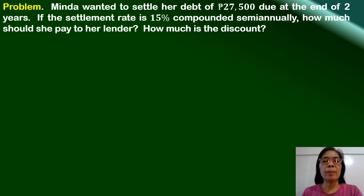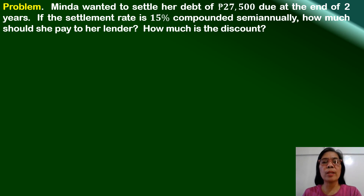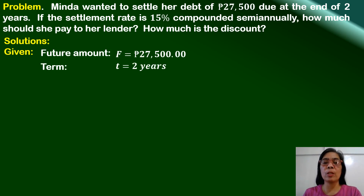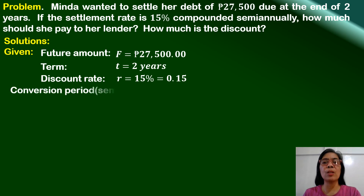Here is a problem. Minda wanted to settle her debt of $27,500 due at the end of two years. If the settlement rate is 15% compounded semi-annually, how much should she pay to her lender? How much is the discount? The future value of the debt is $27,500 and it is due after two years, so the term is two years. The discount rate is 15%, and since it is compounded semi-annually, m is equal to two.